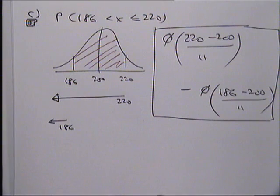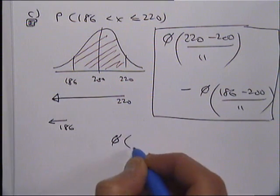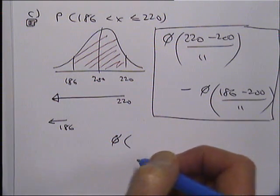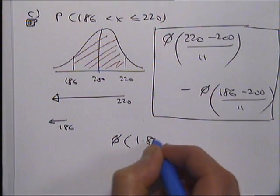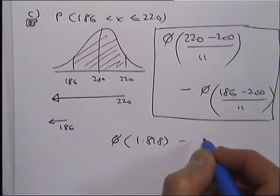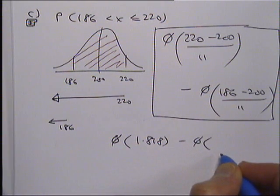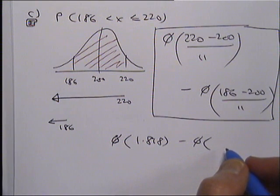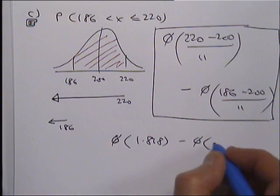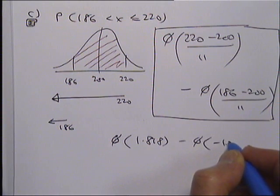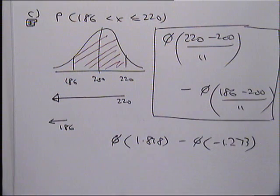And if you do this, the top one, well, we've already worked out with 220 earlier in the example. And that should be giving us the first one a phi value of 1.818. And the second one, 186, should give us a phi value of, is that one minus 1.273? So we've converted it into two phi numbers.